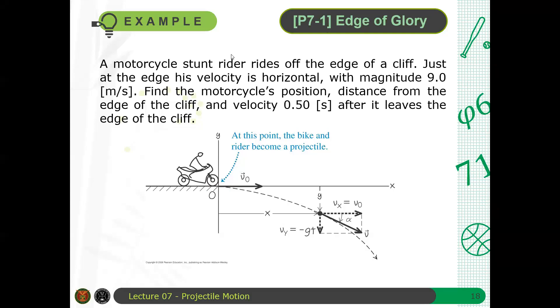Let's have an example here. A motorcycle stunt rider rides off the edge of a cliff. Just at the edge, his velocity is horizontal with magnitude 9 meters per second. Find the motorcycle's position, distance from the edge of the cliff, and velocity 0.5 seconds after it leaves the edge of the cliff.